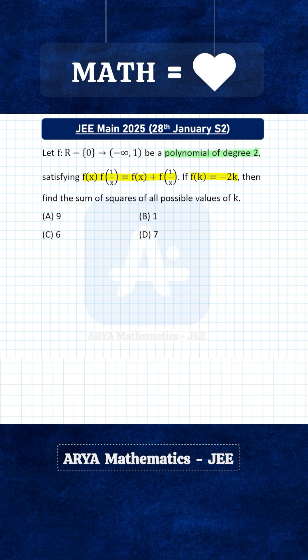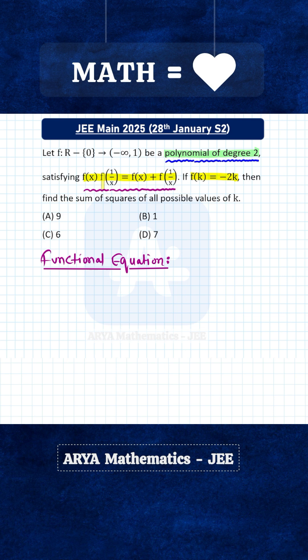This is a very interesting problem from functional equations. We know that if fx is a polynomial function satisfying the functional equation f(x)·f(1/x) = f(x) + f(1/x), then f(x) must be of the form 1 + x^n or 1 - x^n.